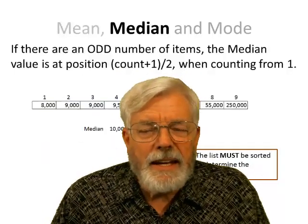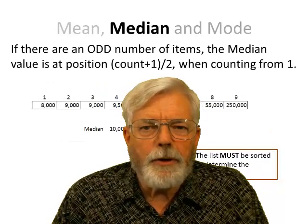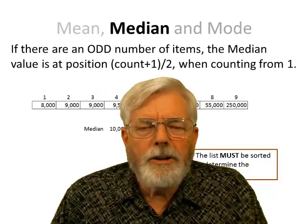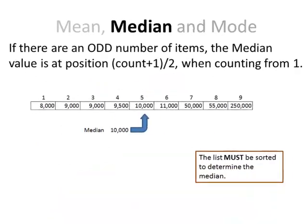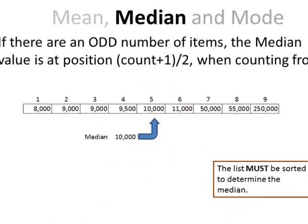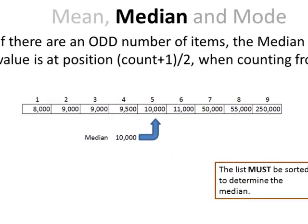The median is a little bit different. I need to have a sorted list. So if there are 9 data items, then the 5th item is the one in the middle. In this case, if I have 8,000, 9,000, 9,500, etc., then the 5th item in the list is 10,000. So the median is 10,000.